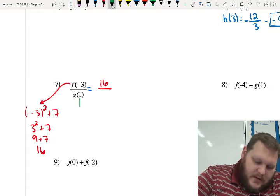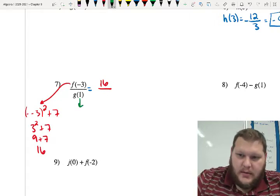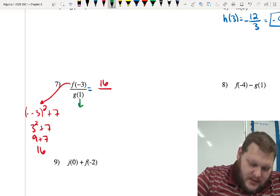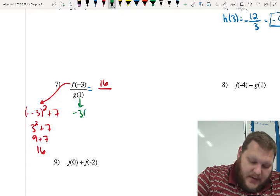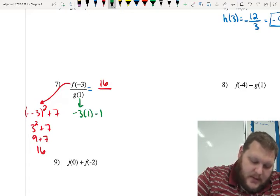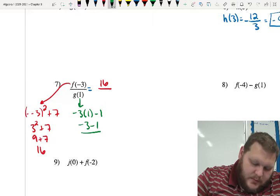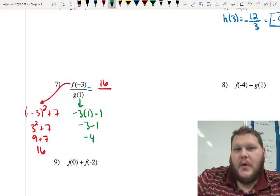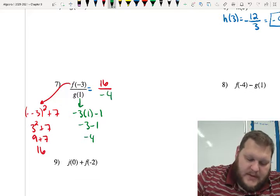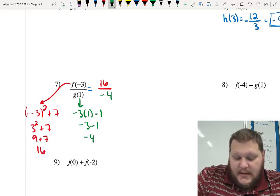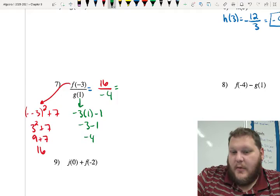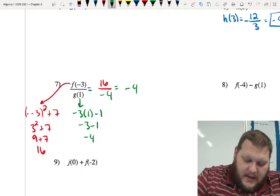I switch over to green here. If I'm evaluating g of 1, g of x, the equation is negative 3x minus 1. So, that would be negative 3 times 1 minus 1. So, negative 3 minus 1 would be negative 4. So, when I combine those together, f of negative 3 is 16, g of 1 is negative 4. So, f of negative 3 over g of 1 would be 16 divided by negative 4, which is negative 4.